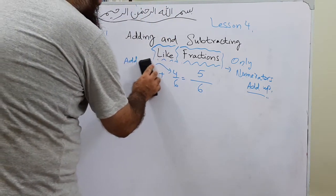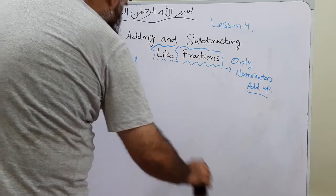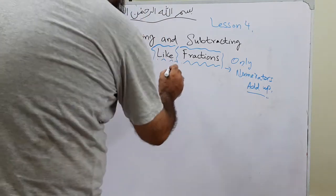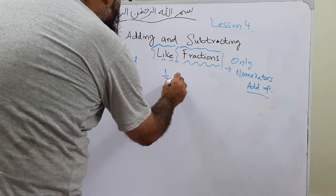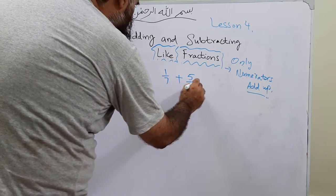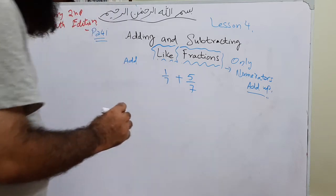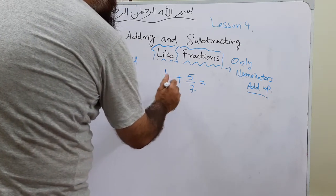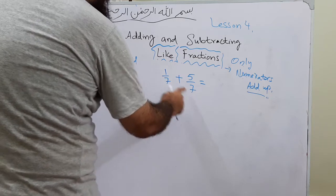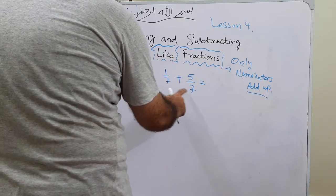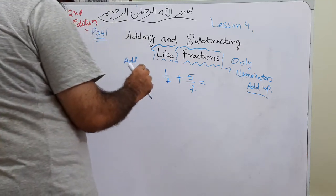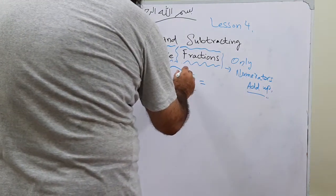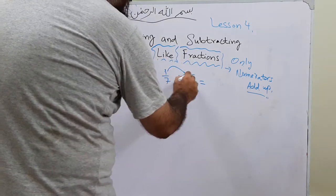That was part a. Now part b: we need to add 1 over 7 and 5 over 7. We'll put a plus sign. The denominators are the same, so this is addition of like fractions. The simplest rule is that only the numerators add up — 1 plus 5 is 6.